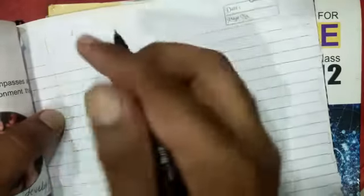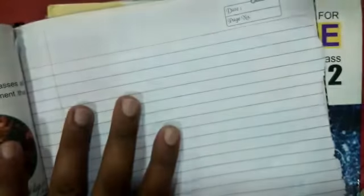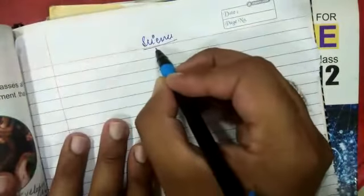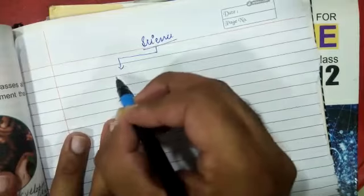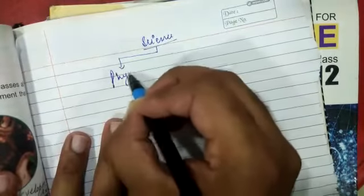For example, up to 8th you all are having science, but after 8th your science will be divided into three subjects. One is physics.